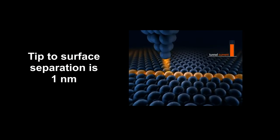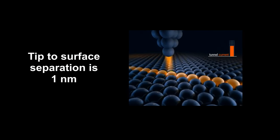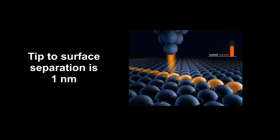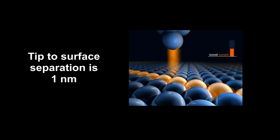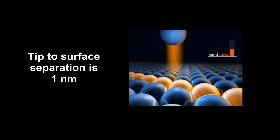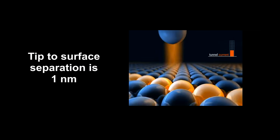As the tip scans across the object, the current will go up or down depending on whether an atom is under the tip or not. This is repeated over and over until the entire surface is mapped.